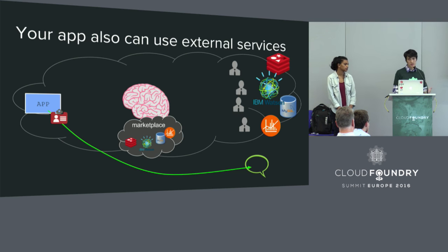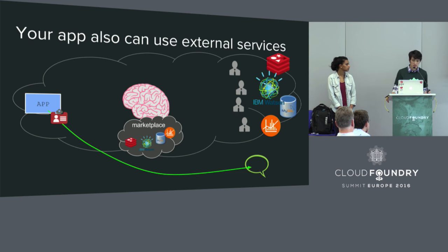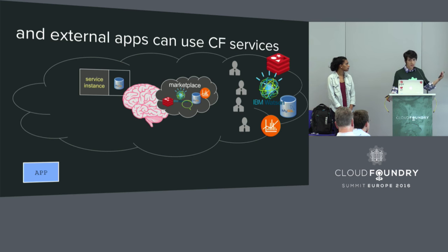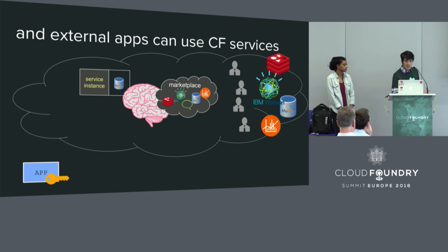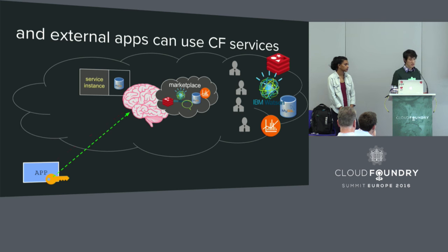With this, you can scale your application up and down with different instances, and all the instances will receive the same information. Whenever the information to access the service changes, all you have to do is update the user-provided service. And the same goes for if you have an application living outside of CF that wants to leverage a service instance. In Cloud Foundry, to use a service instance, you normally bind it to a running CF app. But if your app isn't running inside Cloud Foundry, you can create something called a service key. A service key lets you ask Cloud Controller to get all the credentials you need to access a service instance directly.